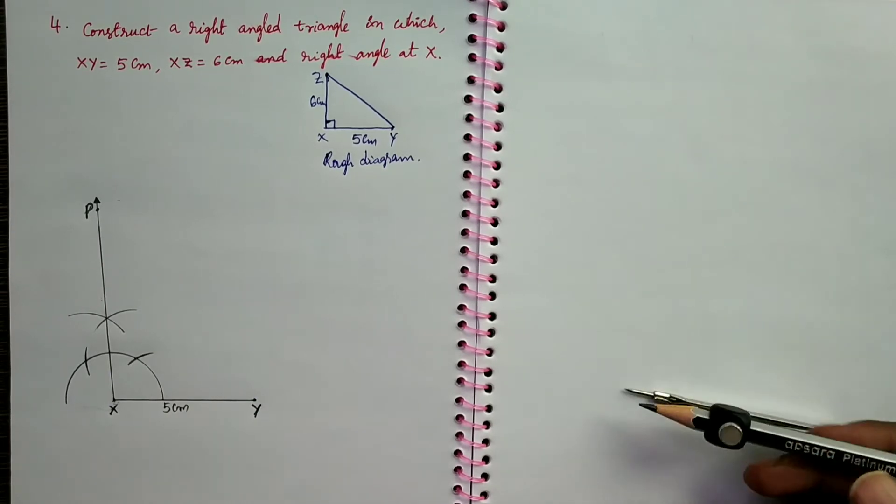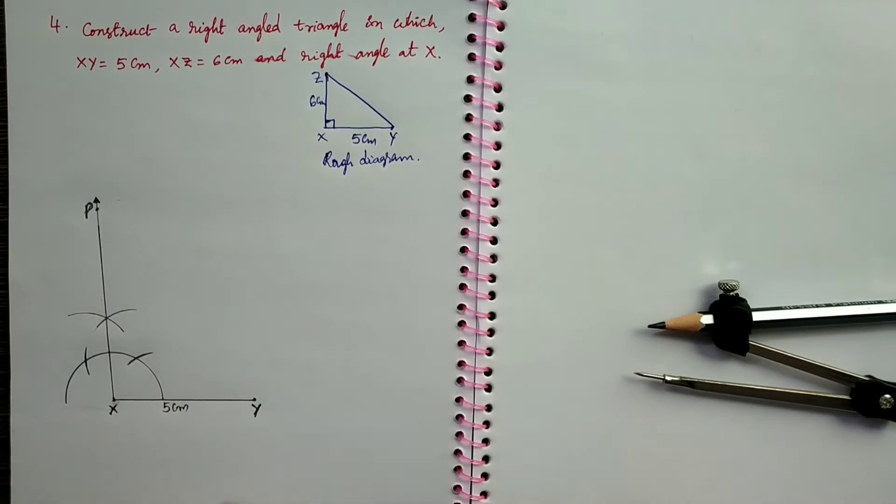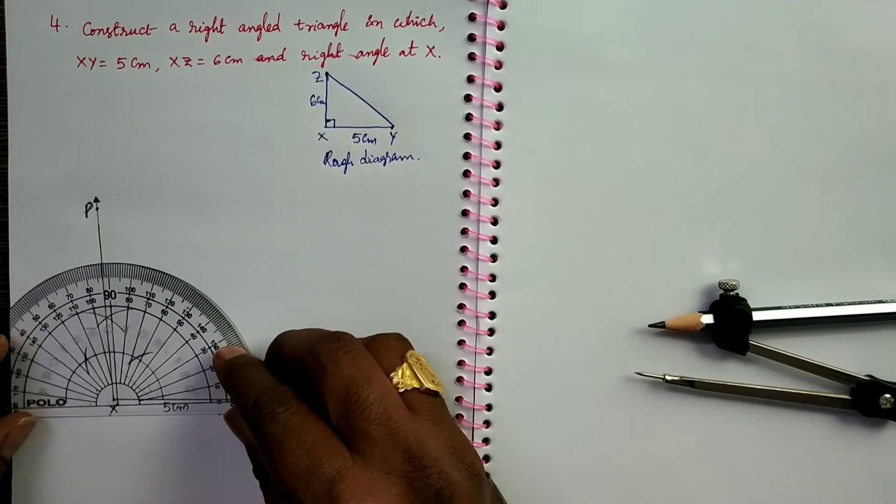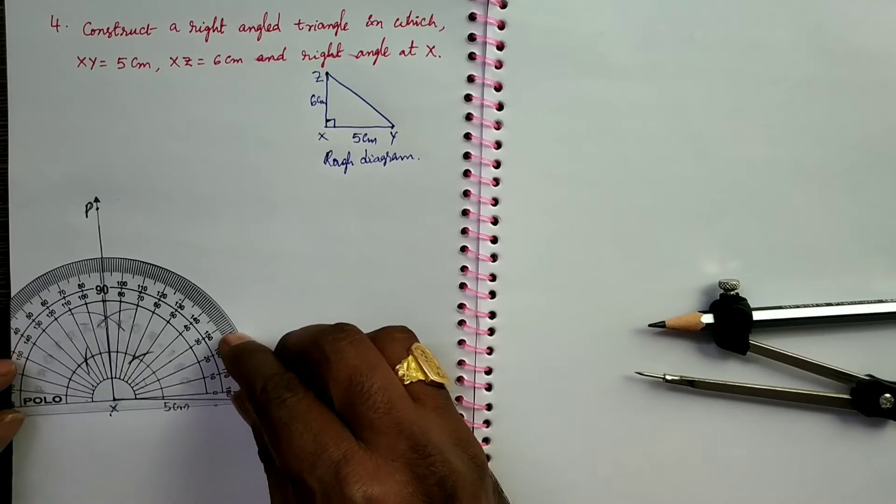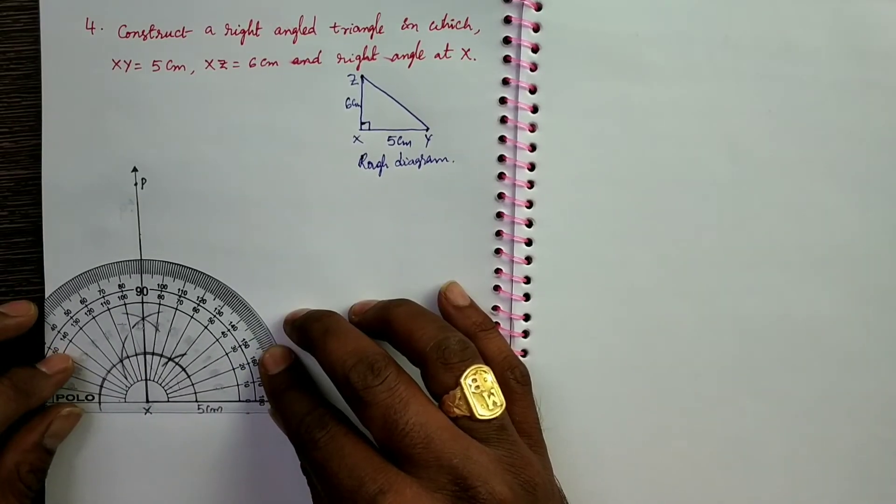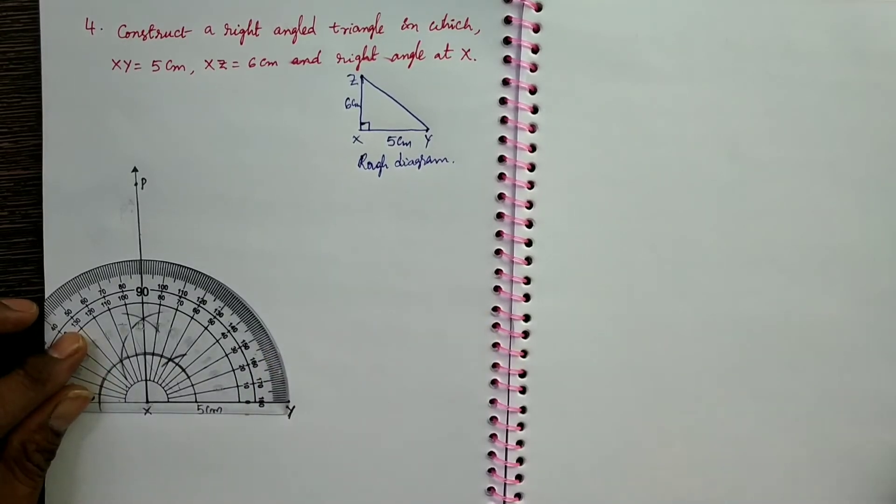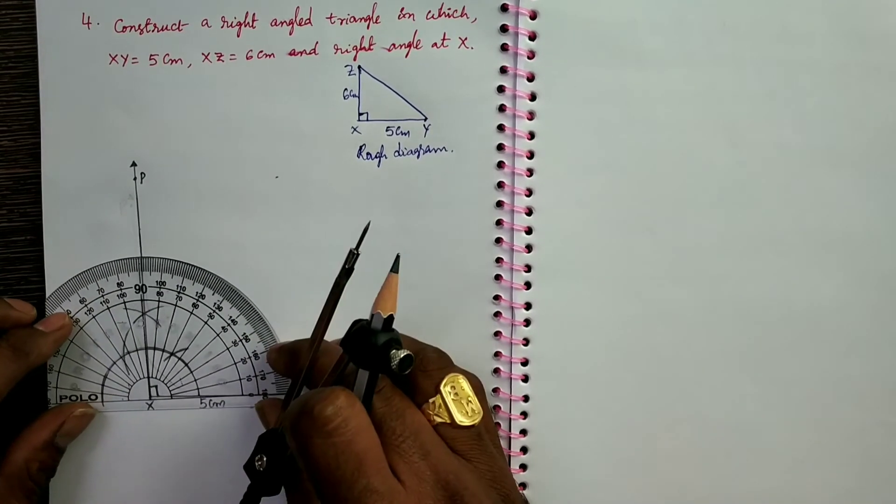From X through the points of intersection of two arcs, draw a ray. Now I constructed 90 degrees without using protractor. We can check by using protractor. This is right, so 90 degrees is constructed.